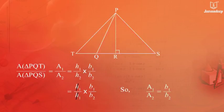Thus, for triangles with same or common height, the ratio of areas of two triangles equals the ratio of their bases.